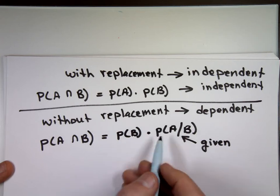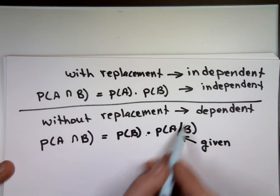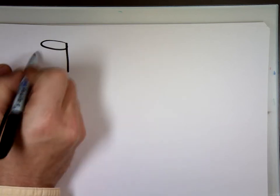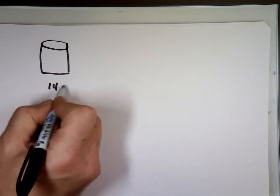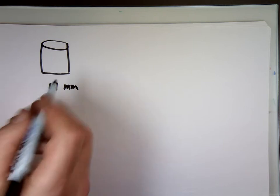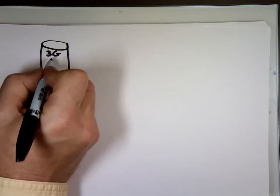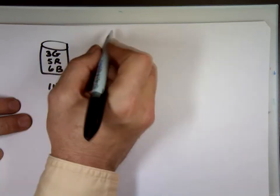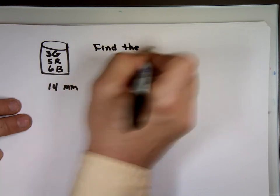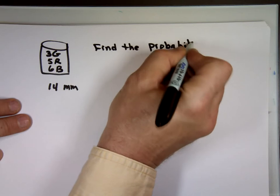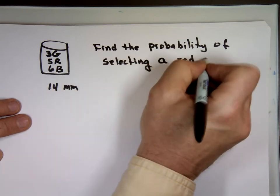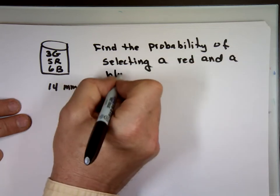The formula as written is: P(A and B) = P(B) × P(A | B), meaning B times A knowing that B already happened. Let's take an example going back to the M&Ms. We had a bag of 14 M&Ms — three green, five red, and six blue. The problem says: find the probability of selecting a red and a blue M&M without replacement.